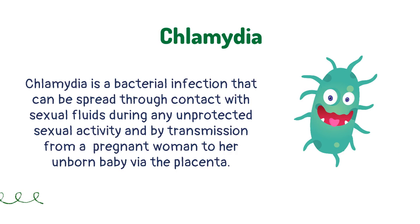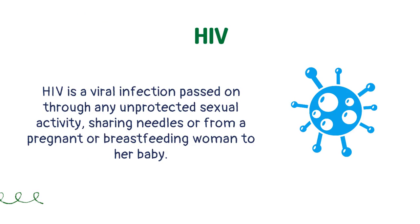There are different types of sexually transmitted diseases. Chlamydia is a bacterial infection that can be spread through contact with sexual fluids during any unprotected sexual activity, and by transmission from a pregnant woman to her unborn baby via the placenta. HIV is a viral infection passed on through any unprotected sexual activity, sharing needles, or from a pregnant or breastfeeding woman to her baby.